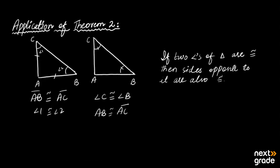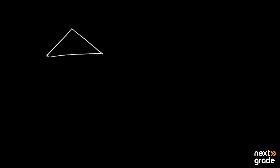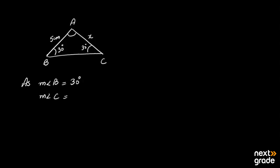Now, how do we apply this theorem? These are simple mathematical expressions. You have a figure given where, for example, one angle is 30 degrees and another angle is also 30 degrees. The measurement of angle C is also given, which is equal to 30 degrees. So basically, the measurement of angle B and the measurement of angle C are congruent.